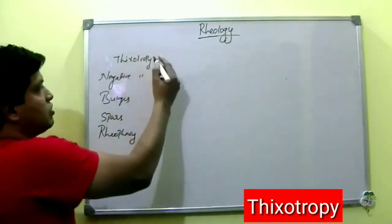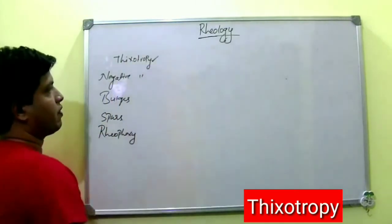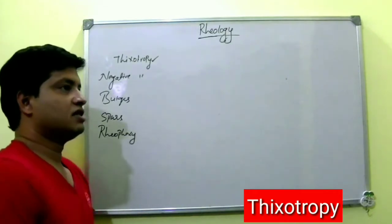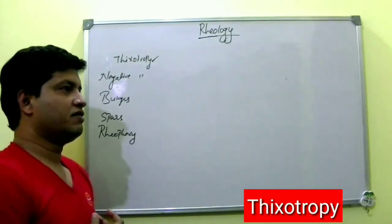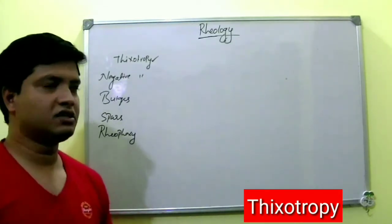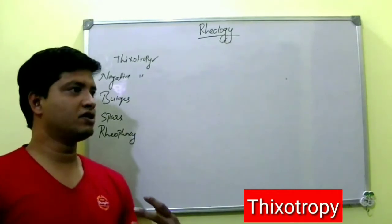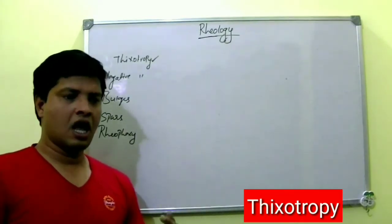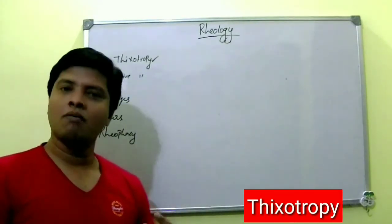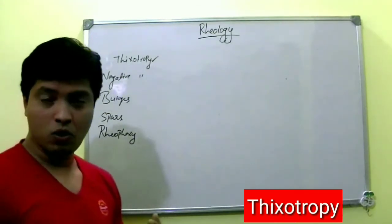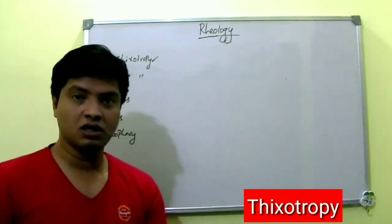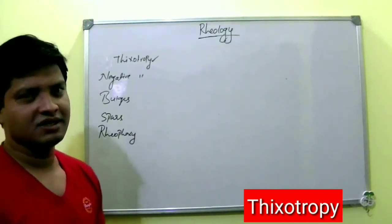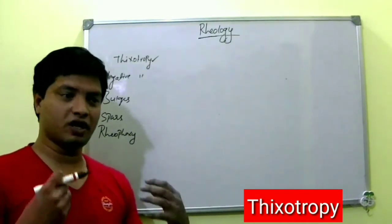Now we will see about thixotropy. What do you mean by thixotropy? The definition says: isothermal and comparatively slow recovery of a system whose consistency is lost upon shearing.